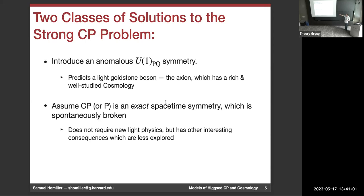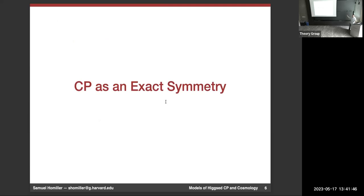The theta term in the Lagrangian breaks both CP and parity, so either would work. Parity is difficult because the standard model field content breaks parity maximally — the entire standard model prefers left-handed fields, so implementing parity requires introducing right-handed partners to everything, with a long history of SU(2)_L × SU(2)_R models. CP on the other hand is just a statement about parameters — there has to be some basis where everything is real — so it's much easier to model. I'll say CP and P somewhat interchangeably, but for model building purposes I'm mostly thinking about CP.